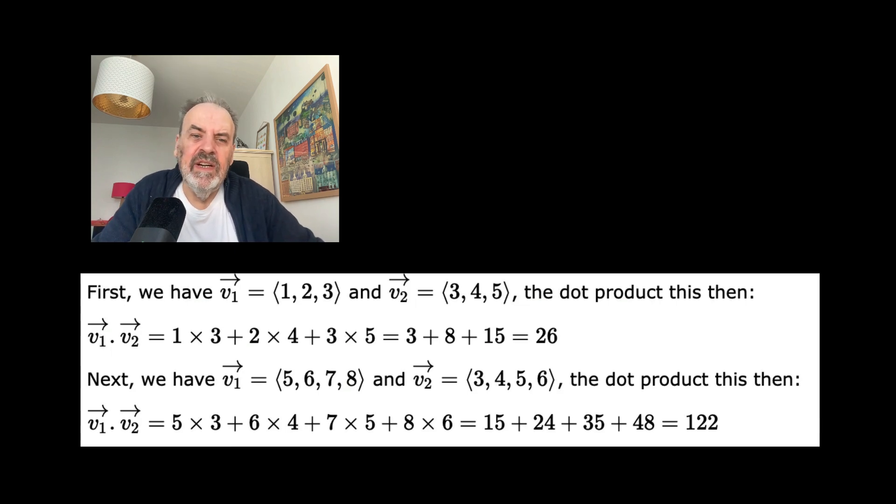For a four dimensional vector (5, 6, 7, 8) and another one of (3, 4, 5, 6), we end up with 5×3 + 6×4 + 7×5 + 8×6. That gives us 122.